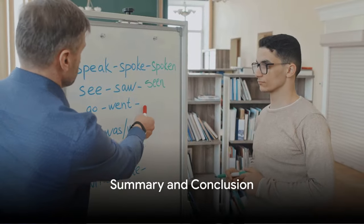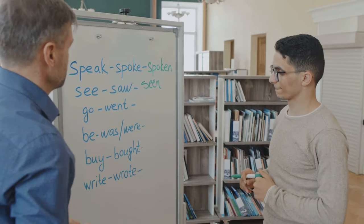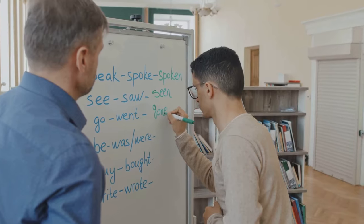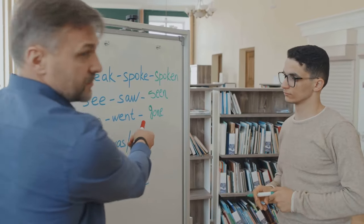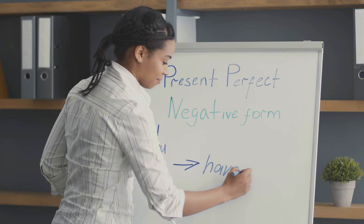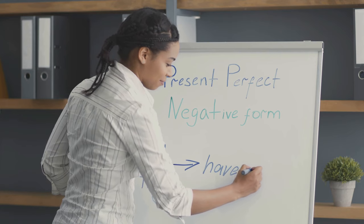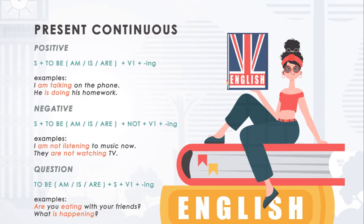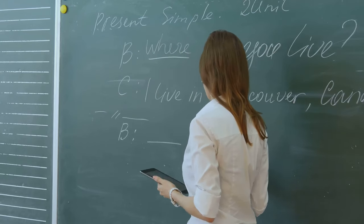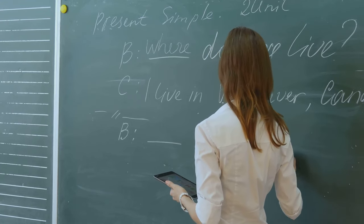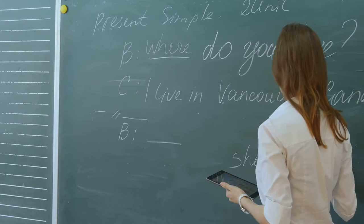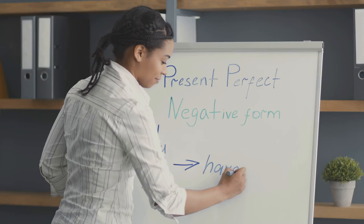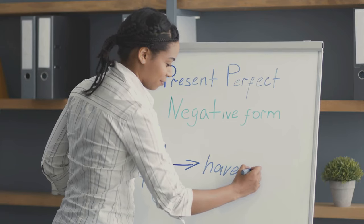To summarize, the future tense in English can be expressed in various ways. The simple future tense and the going to form are used for predictions and plans. The phrases 'be about to' and 'be to' are used for immediate and official future events respectively. The simple present tense is used for official schedules and timetables, while the present continuous tense is used for personal future plans. Finally, the future continuous tense talks about future actions that will be in progress.